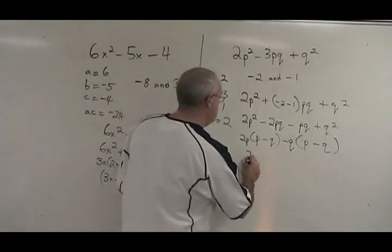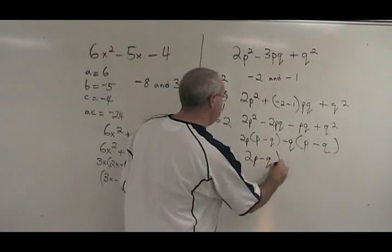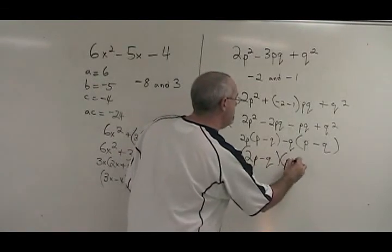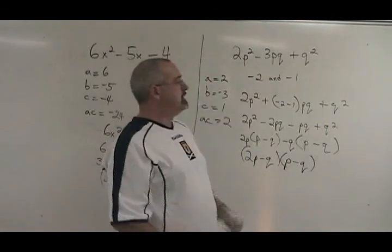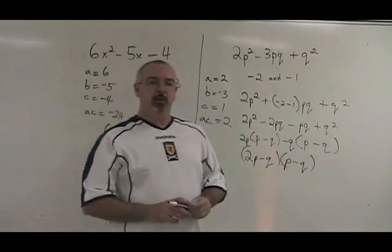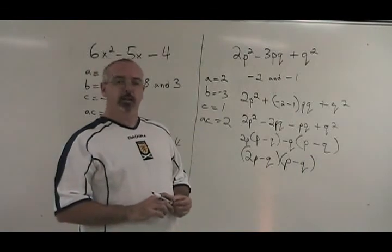We just have to write our answer now. 2p minus q in the first bracket and p minus q in the second bracket. When multiplied together will give your original question.